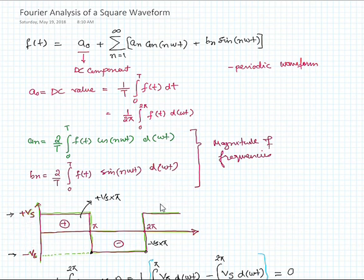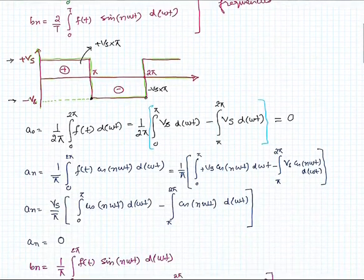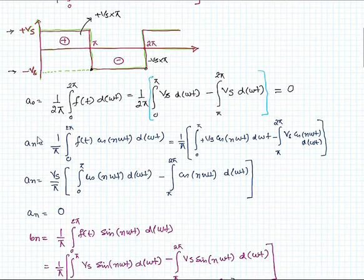Let's perform the Fourier series analysis of this one. The DC component for this one, a0, will be equal to 1 by 2π, integration of the signal over the time period. If you solve that one, that will come out to be 0 because the positive area and the negative area both of them are equal. There is no offset, so that's why it is 0.